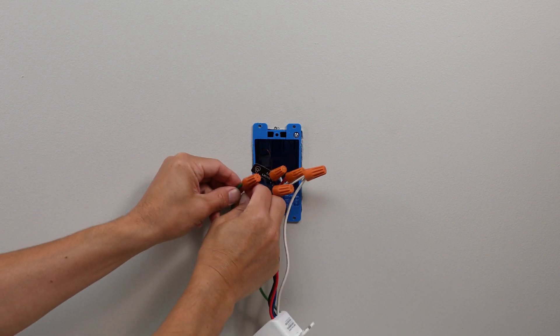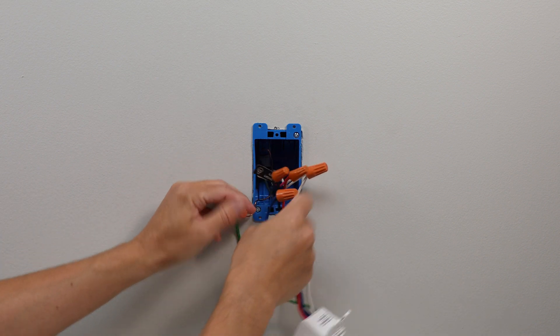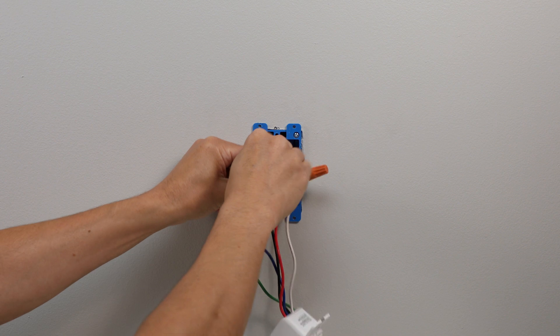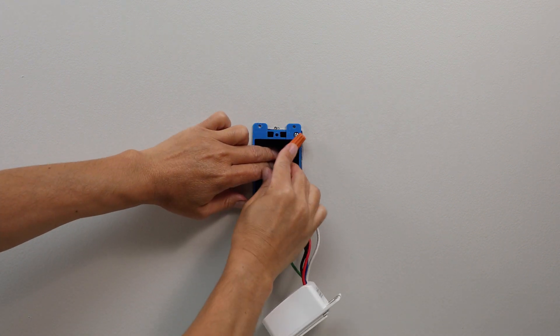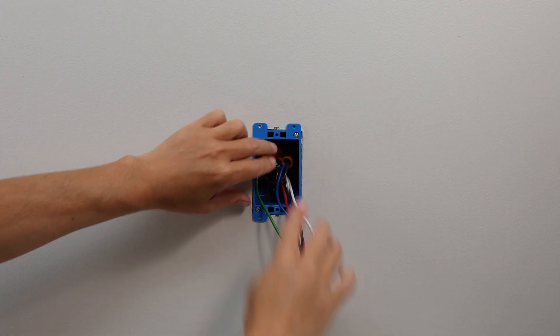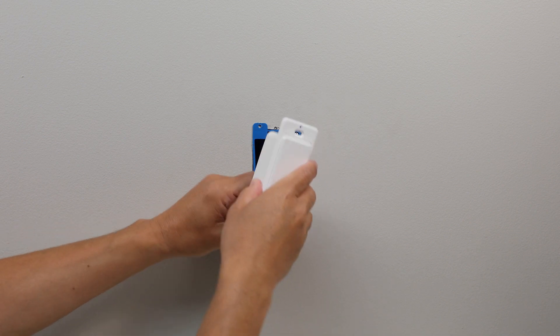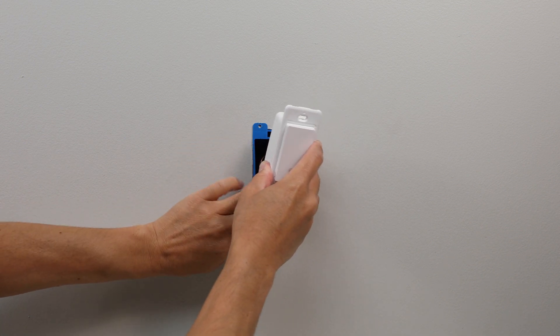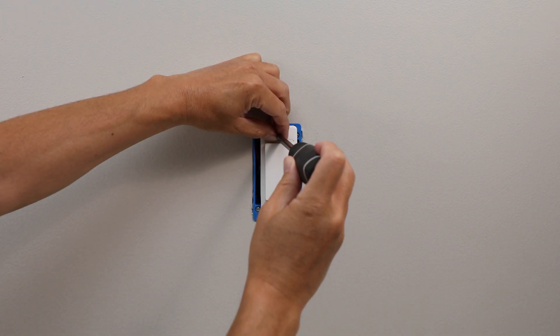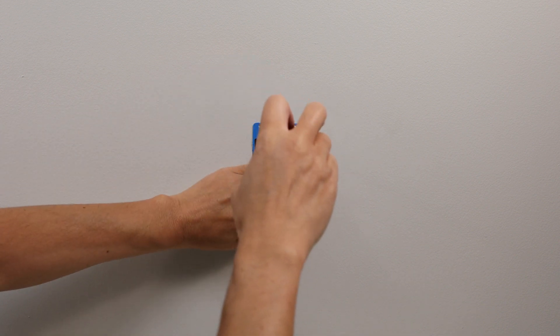Tug on each wire to make sure all the wire nuts are secure and carefully tuck wires behind the light switch. Screw the light switch into the wall and snap on the faceplate.